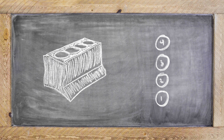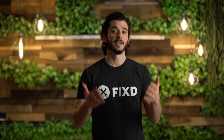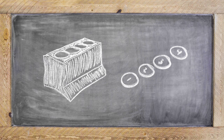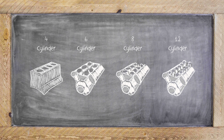P0301 means that there is a specific misfire in your first cylinder. And that's the difference between, say, the P0300 code, in which case random multiple cylinders are misfiring. Since it's happening in that first cylinder, that means it could be happening in a 4, 6, 8, or even 12-cylinder engine.